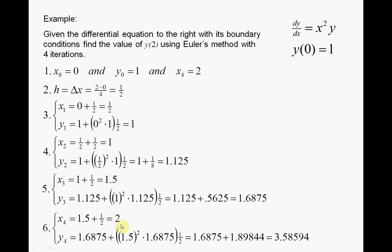x4 is 2. We're on the last point. y4 equals y3, 1.6875. x3 squared by y3, by the strip width. What's x3? 1.5. What's y3? 1.6875. By the strip width, 1.5. There we are. And we get 3.58594.